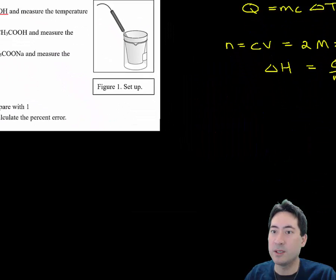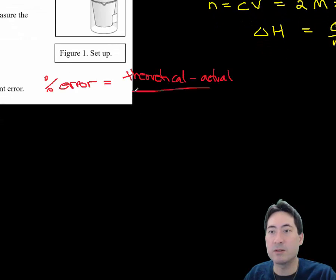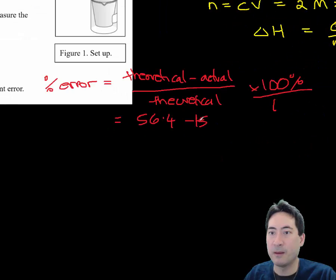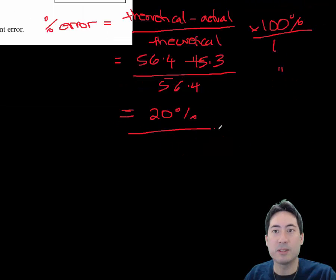Percentage error: theoretical minus actual divided by theoretical. That gives us a 20% error.